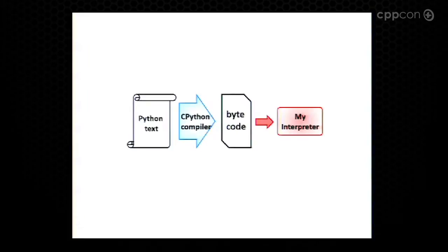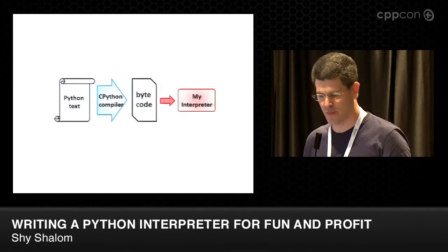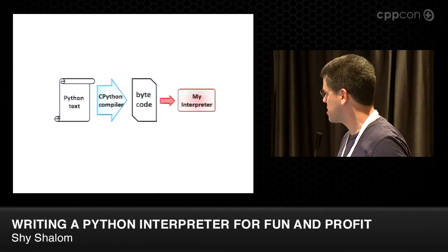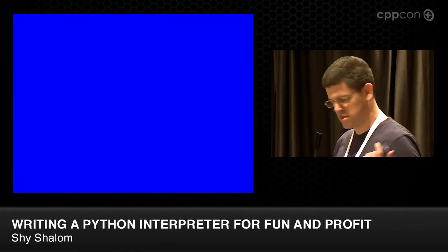What I wanted to do is to take some Python code, and use cPython compiler to compile it into bytecode, and use my interpreter to run this bytecode. So... What happened? Give it a second. Yeah, the cable.